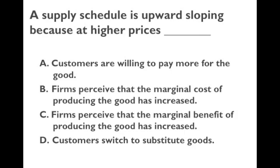If you buy a book for $50 and someone offers you $40, you won't sell because you lose $10 in that transaction. But if someone offers you $60 — an increase of $20 — you will sell the book because your benefits from selling are actually higher. So at higher prices, more sellers benefit from selling the good, and the reason the supply curve is upward sloping is that more firms perceive that the marginal benefit of producing the good has increased. That's C.